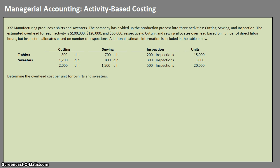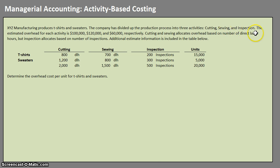Activity-based costing is actually very similar to when you learned about the predetermined overhead rate. In this case we have XYZ Manufacturing Company who is producing t-shirts and sweaters. They have three production processes: cutting, sewing, and inspection. They have estimated overhead of $100,000 for cutting, $120,000 for sewing, and $60,000 for inspection. The allocation base is number of direct labor hours for cutting and sewing, and number of inspections for the inspection department. Any additional information is included in the table.